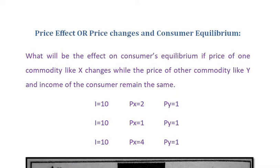What will be the effect on consumer equilibrium if price of one commodity like X changes while the price of other commodity like Y and income of the consumer remain the same? If there are two commodities, one is X and the other is Y, then X is the price change. The other commodity is Y and consumer income is the same.